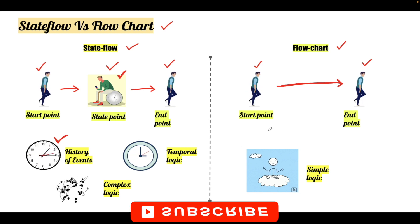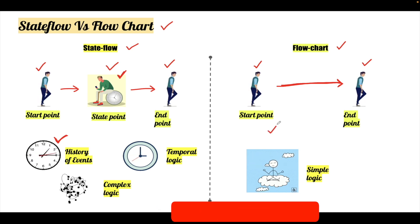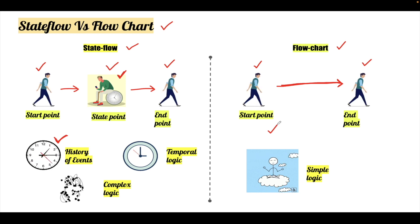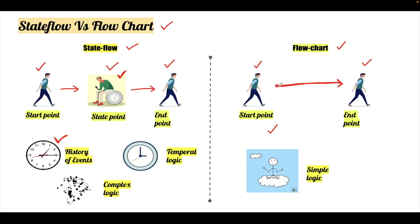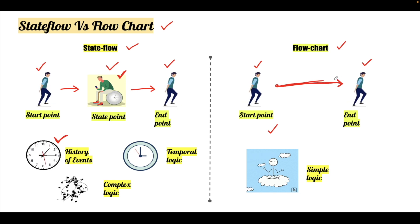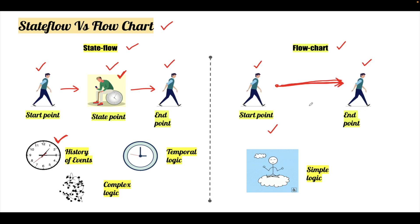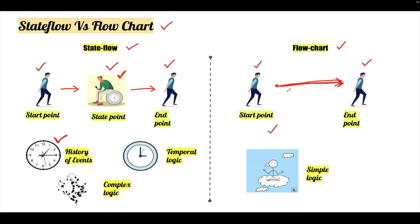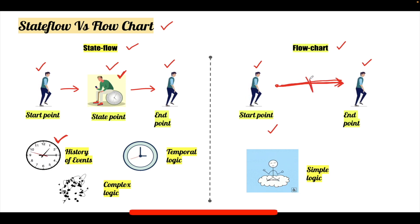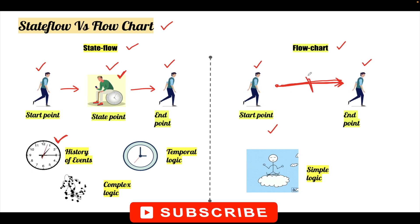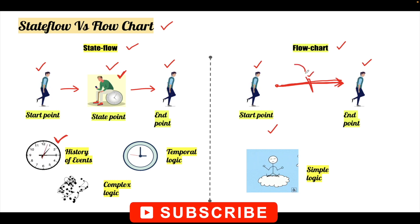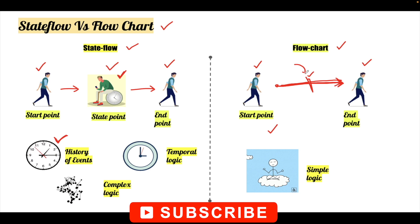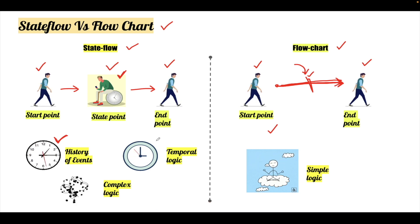The same is not possible in a flow chart, because we are completing the loop from start to end and there is no intermediate point where we can stay, record the history, and come back to it. This is not possible in a flow chart.